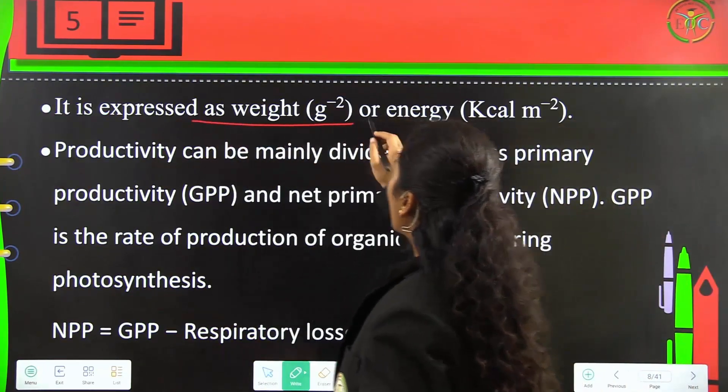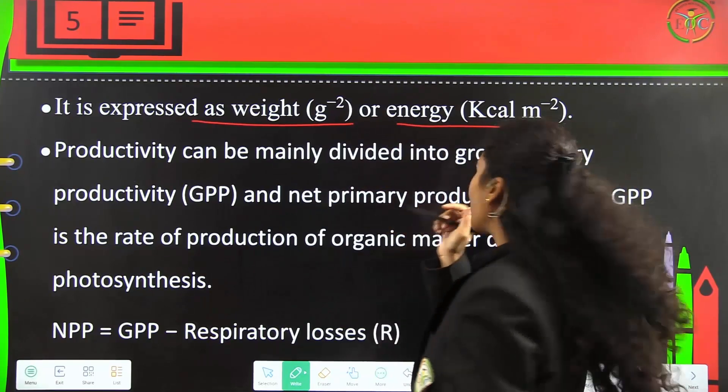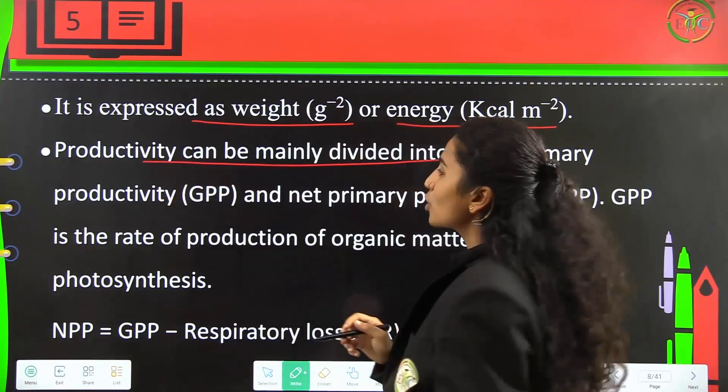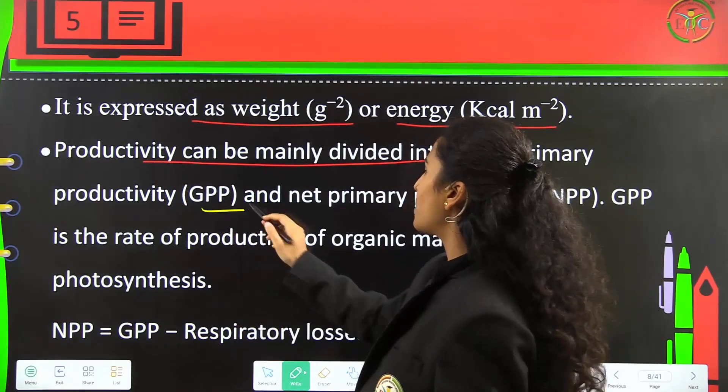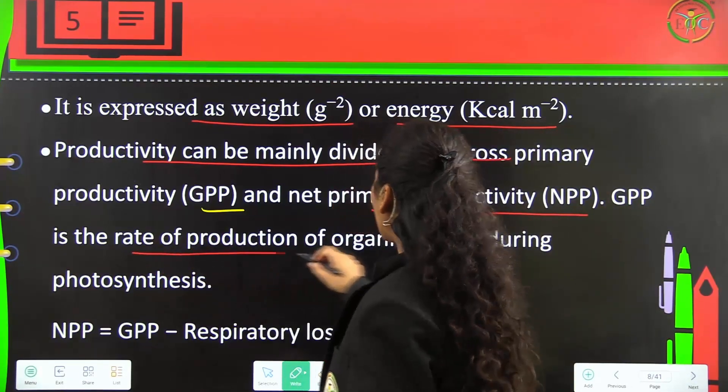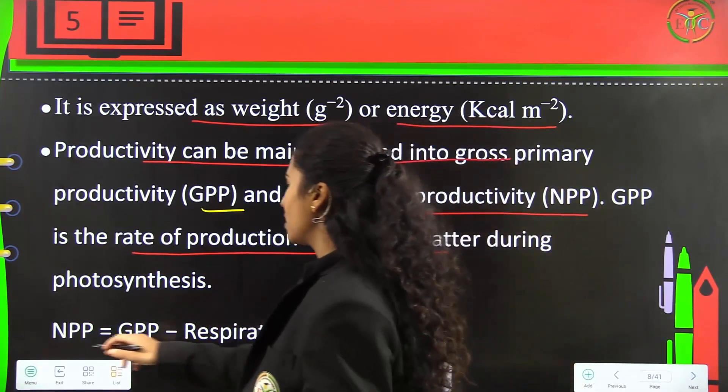It is expressed as weight (g⁻²) or energy (kcal m⁻²). Productivity can be mainly divided into gross primary productivity (GPP) and net primary productivity (NPP). GPP is the rate of production of organic matter at the time of photosynthesis.